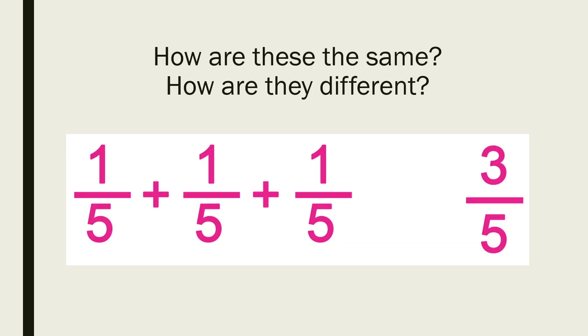Let's start today by taking a look at how these things here are the same and how they are different. On the left hand side we have one fifth plus one fifth plus one fifth, and then on the right we have three fifths. So again, how are these the same and how are they different?